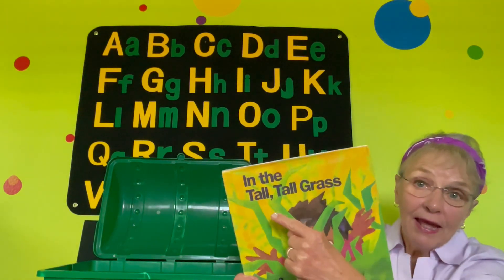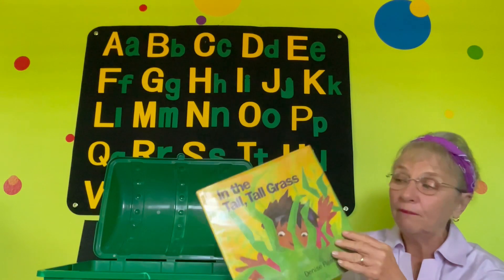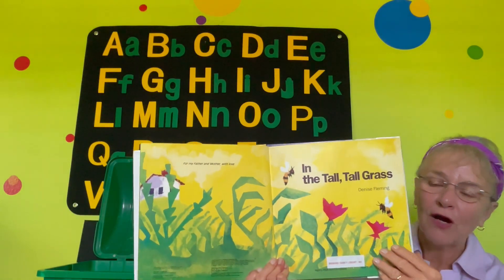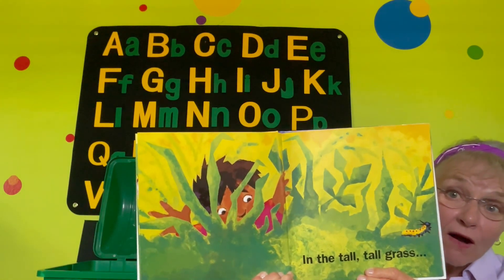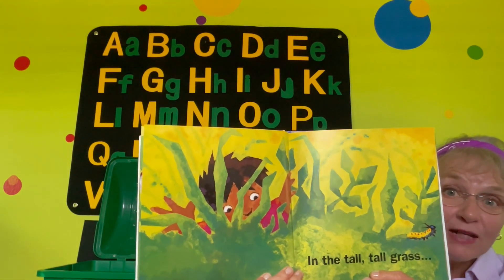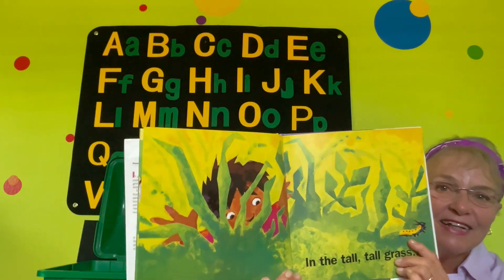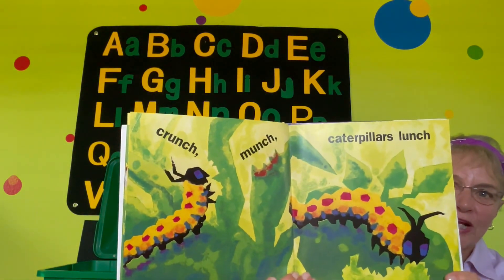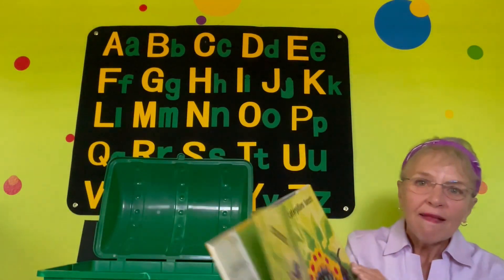This story is called In the Tall Tall Grass and it's by Denise Fleming. In the Tall Tall Grass. Do you see the little boy lying on his belly in the grass? He's looking at something in the Tall Tall Grass. What's he looking at? Yep, our caterpillar. He can see it. Crunch, munch, caterpillars, lunch. Caterpillars eat a lot.